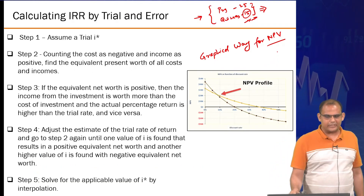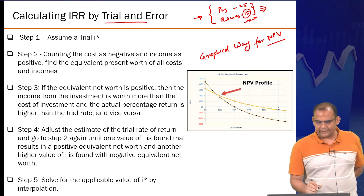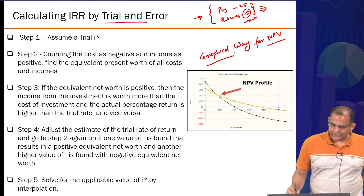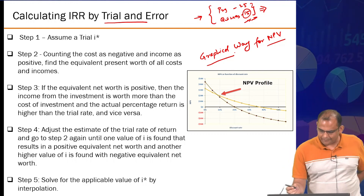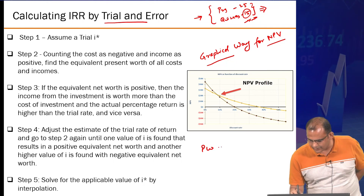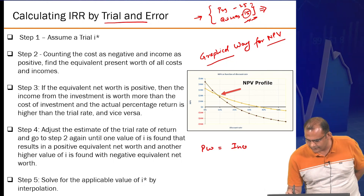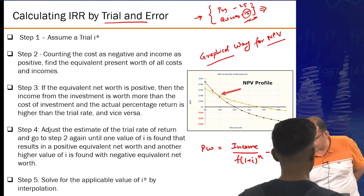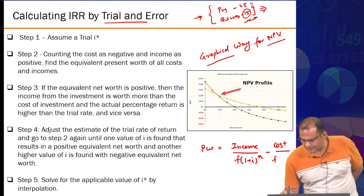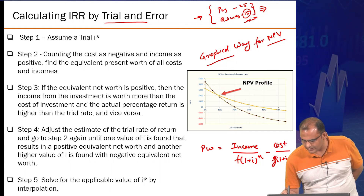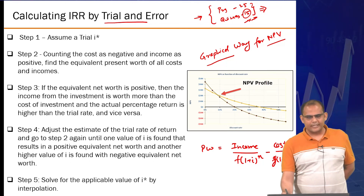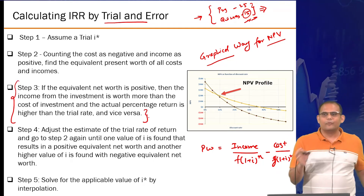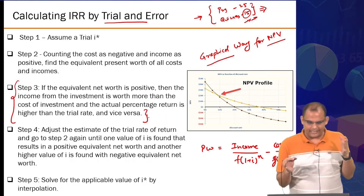There are two types of methods. One is the trial and error method, and the other is the graphical way of estimating IRR. In trial and error, the present worth is a function of income and cost — each as some polynomial function of the interest rate I. The idea is intuitive: you know which direction to move when doing the analysis trial by trial.